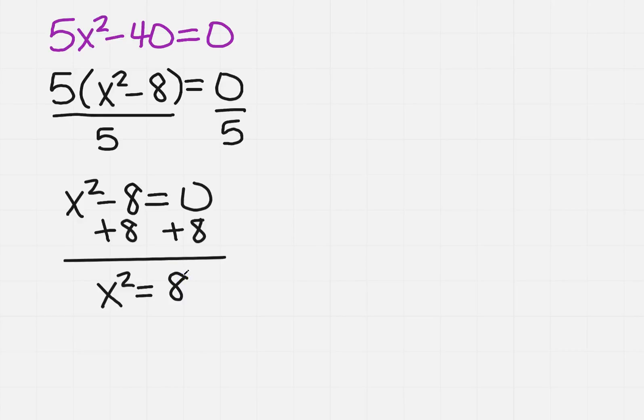We want to take the opposite of square, so that means we're going to take the square root of both sides, and we take the plus and the minus of the square root of 8.